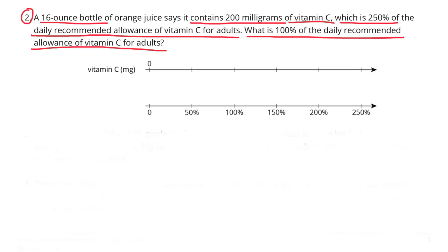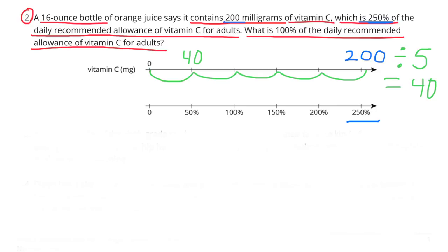Number 2. A 16-ounce bottle of orange juice says it contains 200 mg of vitamin C, which is 250% of the daily recommended allowance of vitamin C for adults. What is 100% of the daily recommended allowance? The information says that 200 mg is 250%, so on the double number line, we'll put 200 mg directly above 250%. If you count the spaces between 0 and 200 on the top and 0 and 250% on the bottom, you'll notice there are 5 sections.